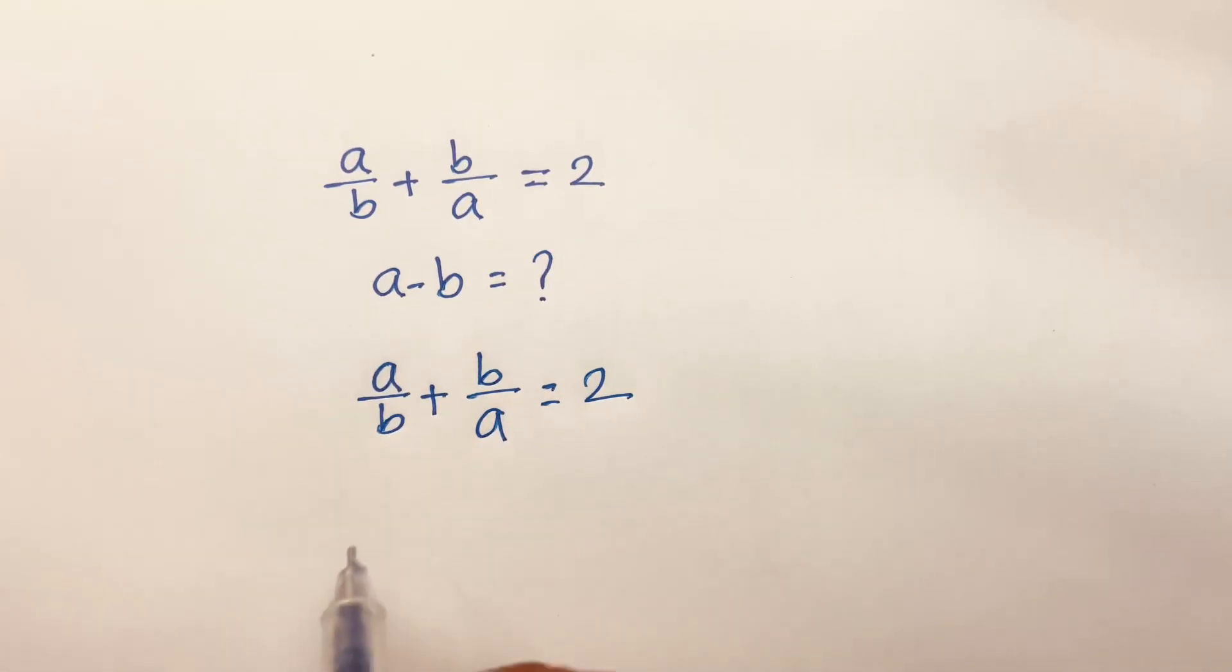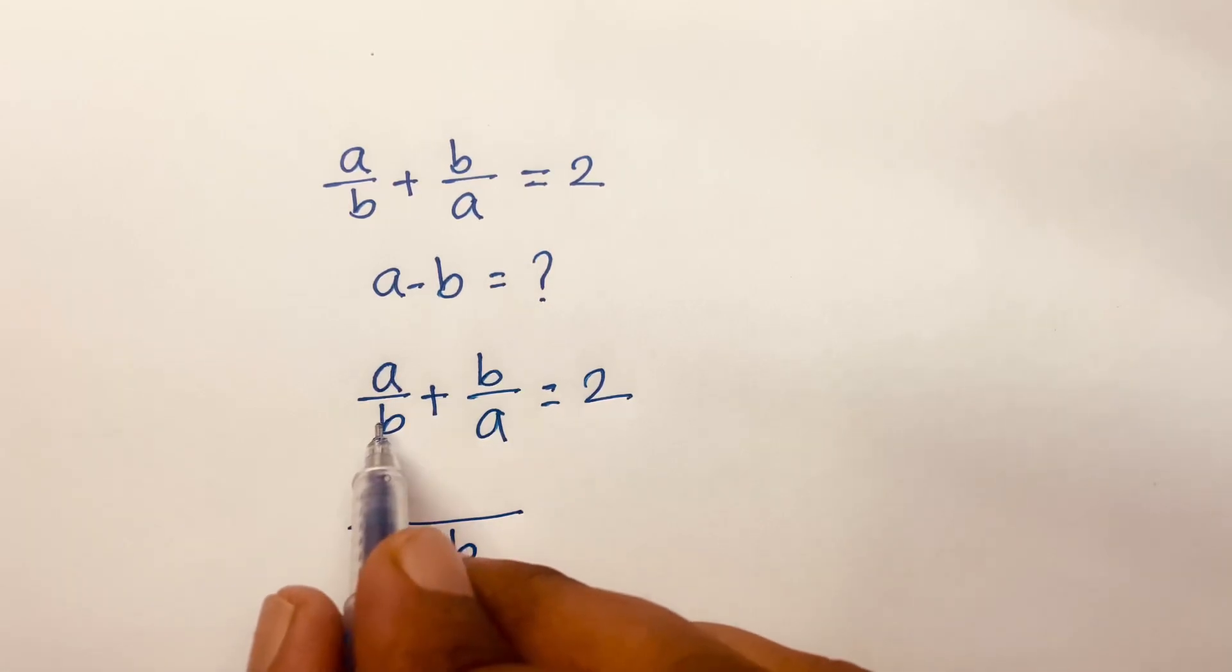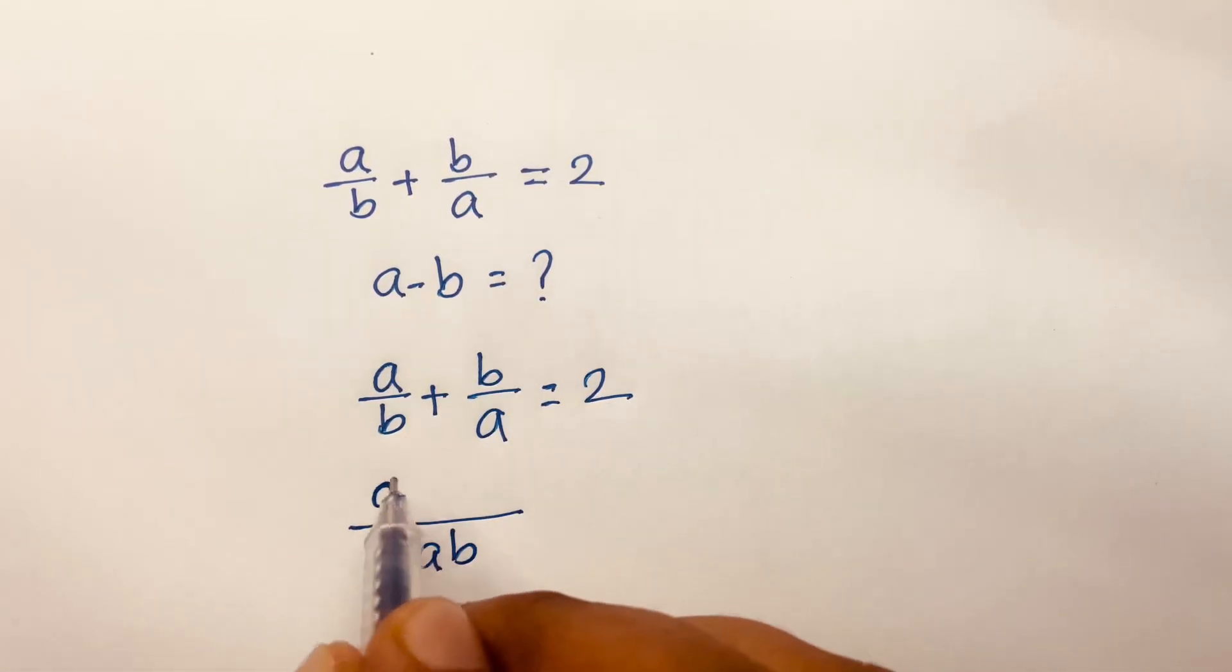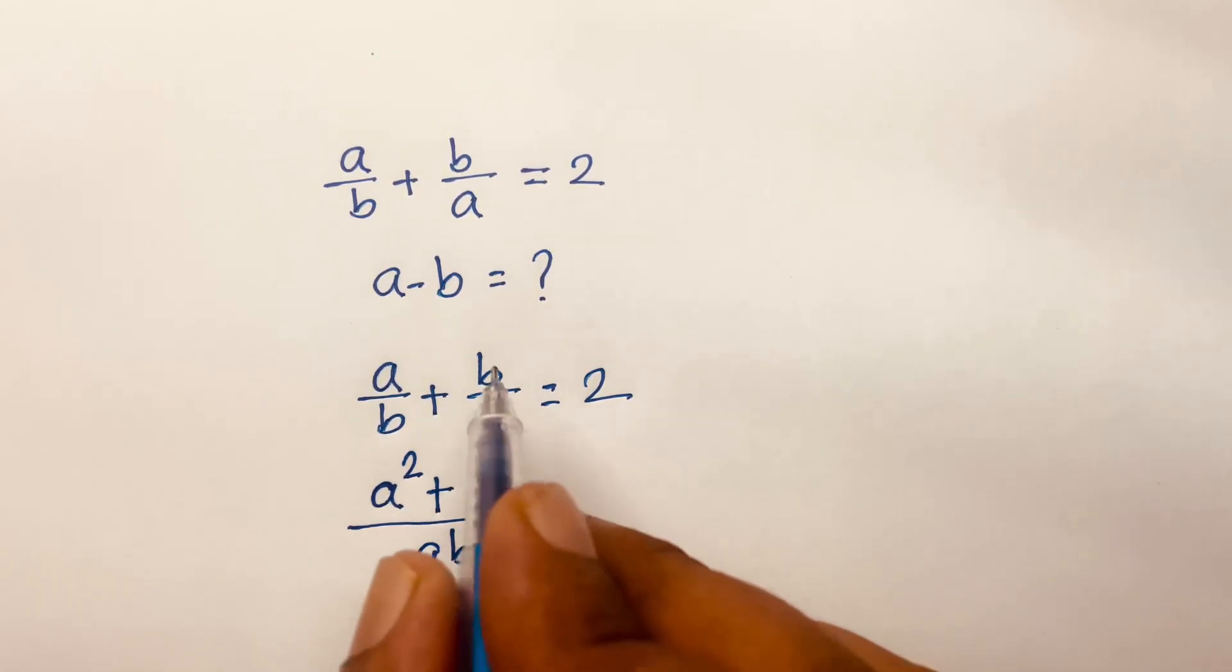Then I can find the common denominator which is ab. So a divided by b becomes a times a which is a², plus b divided by a becomes b times b